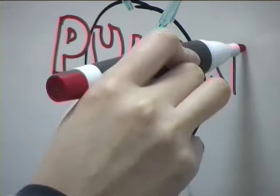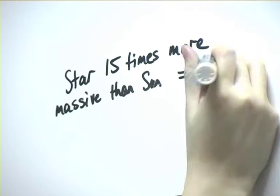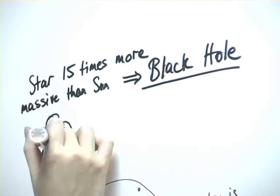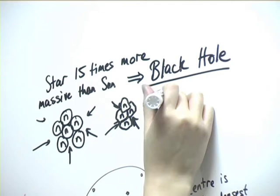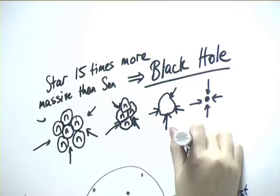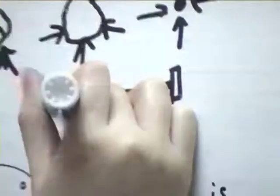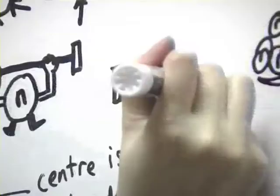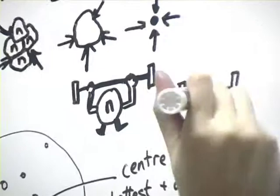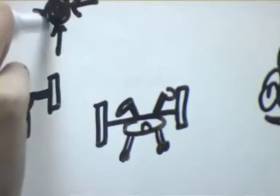A black hole is formed instead of a neutron star if the star was approximately 15 times more massive than the Sun. The collapse of the star would be so great that not even neutrons can withstand the high pressures. The core collapses into a singularity forming a black hole. It is so dense that not even light can escape its gravitational pull. As nothing can travel faster than light, nothing can escape the pull of a black hole.